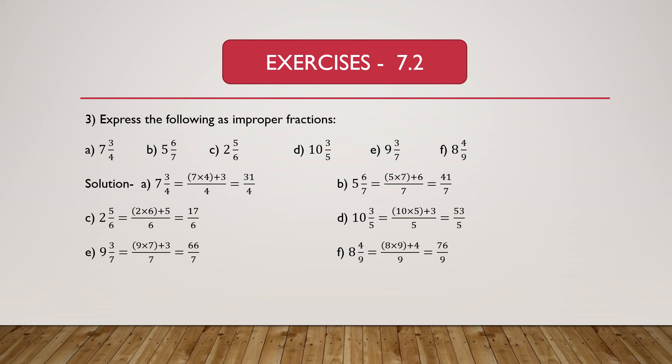Part F is given as 8 and 4/9. We have to express this mixed fraction as an improper fraction. Here 8 is the whole part and 4/9 is the proper fraction. Improper fraction equals whole multiplied by denominator, and the result is added to numerator, divided by denominator. So 8 multiplied by 9 is 72, and 72 plus 4 equals 76, with denominator 9. So 8 and 4/9 equals 76/9.